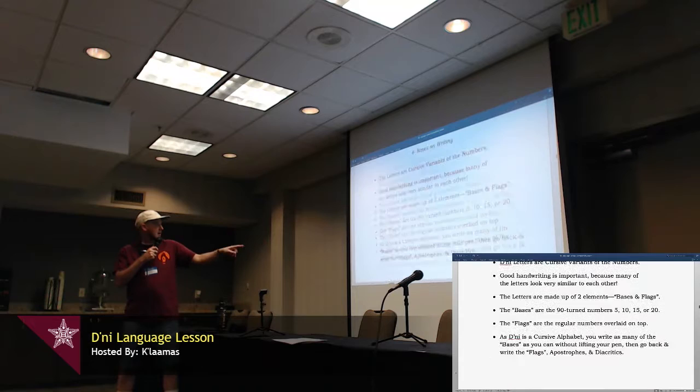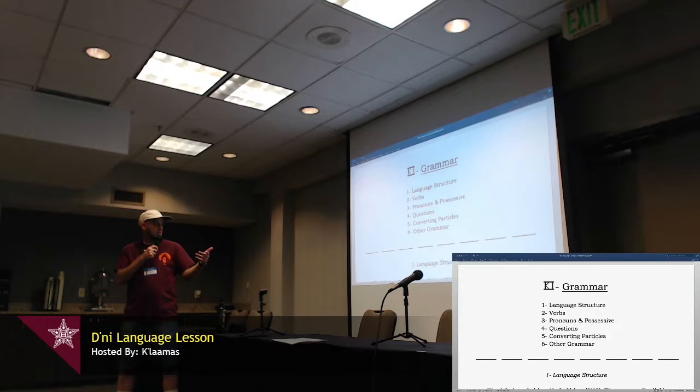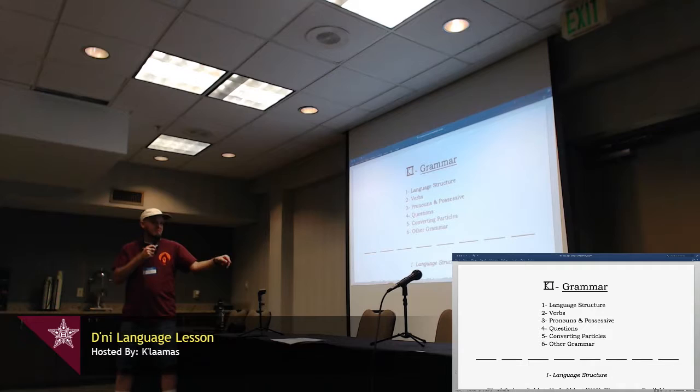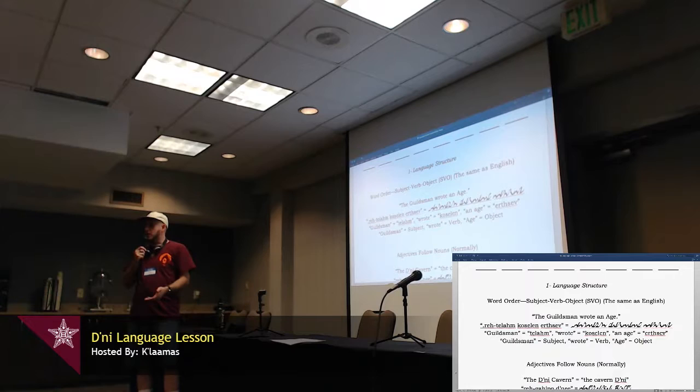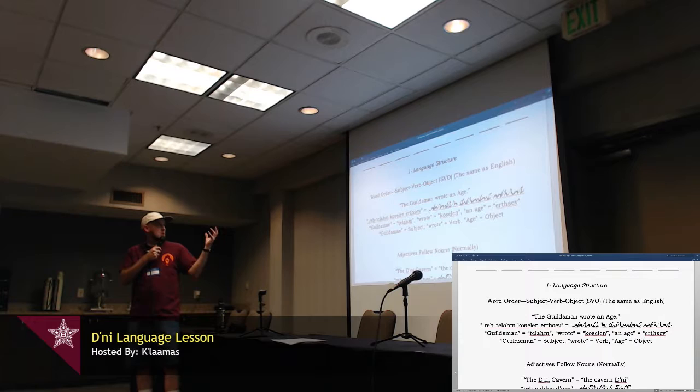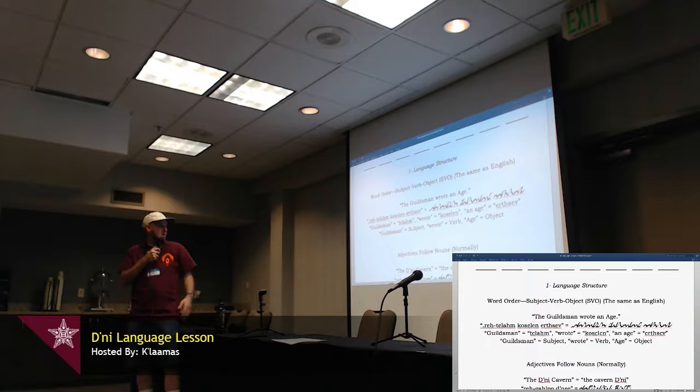Some grammar. We'll do a bit on language structure, verbs, pronouns and possessive, questions, converting particles, other grammar. Word order is like English, subject, verb, object. So like, the Guildsman wrote an age. Guildsman is the subject which verbs an object. Guildsman wrote an age. It's the same in D'ni. Telam is Guildsman. Koselen is wrote, age, ersev. Telam, koselen, ersev. So, some languages are like totally different, and it can be really hard to translate or wrap your brain around it, but it's the same as in English, so it makes it fairly easy.